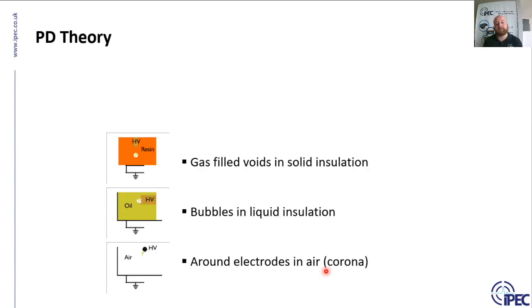PD can occur in gas-filled voids in solid insulation. It can be in bubbles in liquid insulation or around electrodes in air, which sometimes can be corona, but can also be surface tracking.